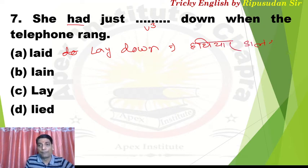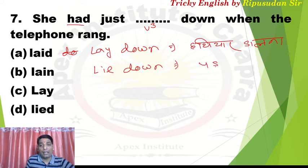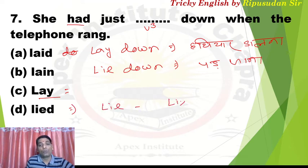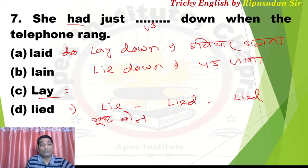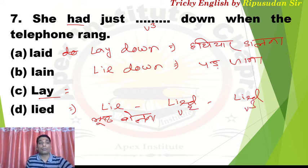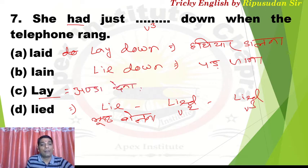'Lain' is the V3 of 'lie'. 'Lie-lay-lain' — so 'lie down' means to lie down, to recline. This 'lain' form is what we need as V3. Now there is another 'lie' whose forms are 'lie-lied-lied', meaning to tell a lie. And 'lay' when used as a verb means to place — to lay eggs, to lay down, to make someone lie down. All these are its verb functions.